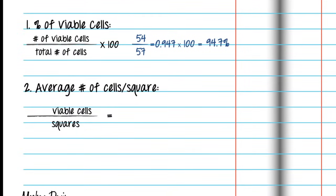Next, let's determine the average number of cells per square. We counted 54 viable cells. We divide 54 by 5 because we counted in 5 squares. The average number of cells per square is 10.8 cells.